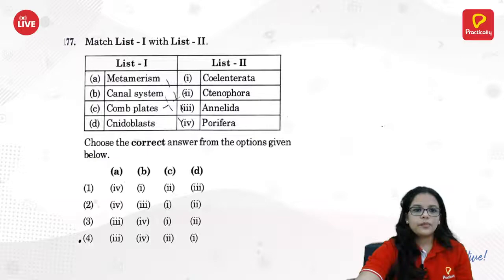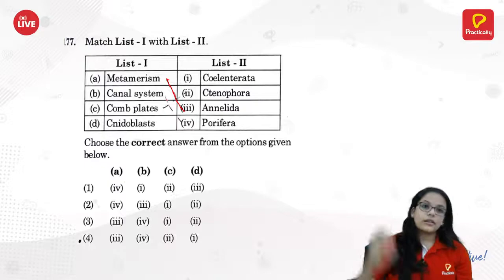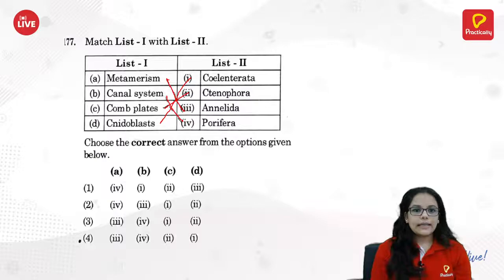Characteristics of invertebrates: metamerism is found in Annelida. Canal system — where the body takes water in and out — is in Porifera. Comb plates are seen in Ctenophora. Nematoblasts are in Coelenterata. So A3, B4 — oh wait, C2 is the answer.